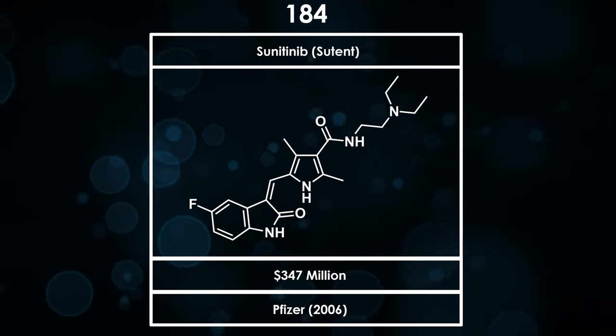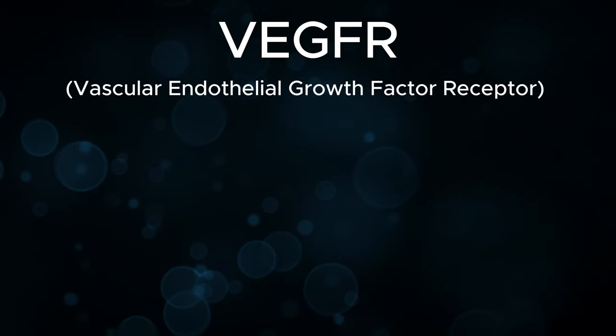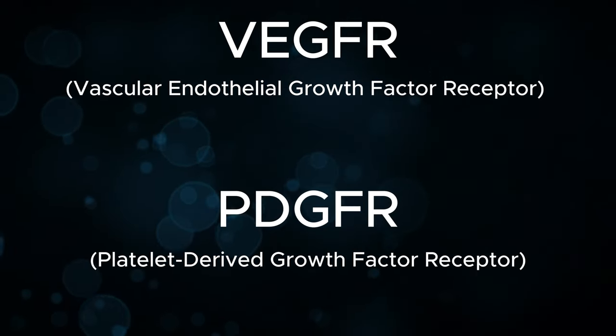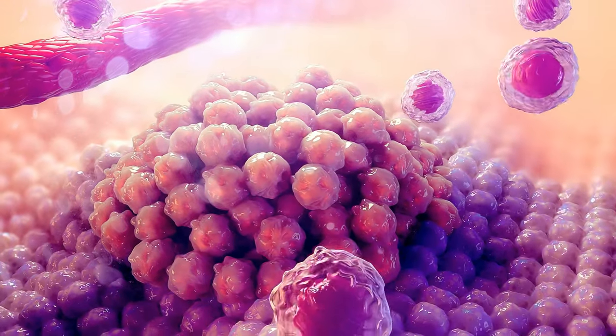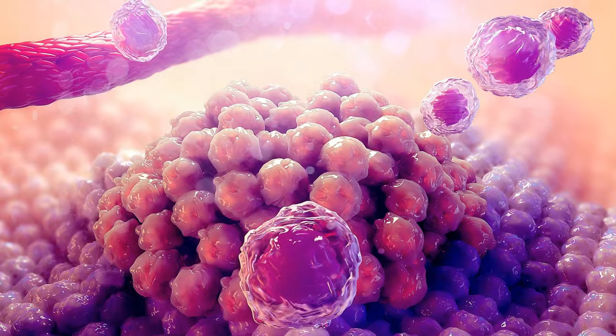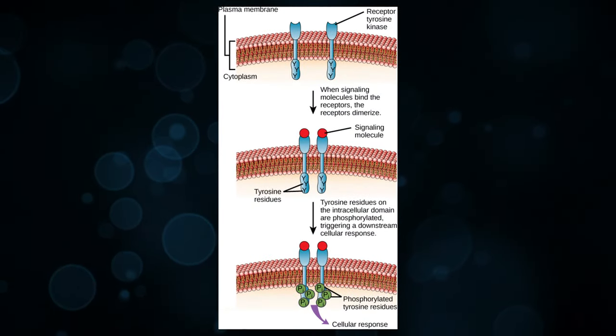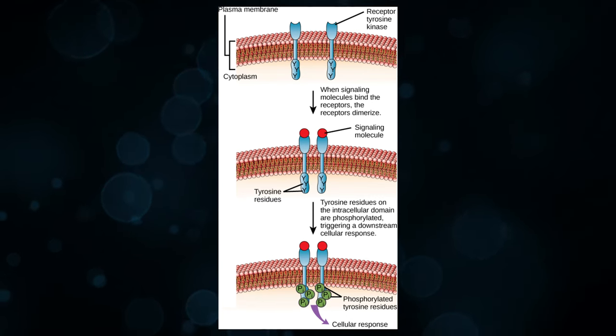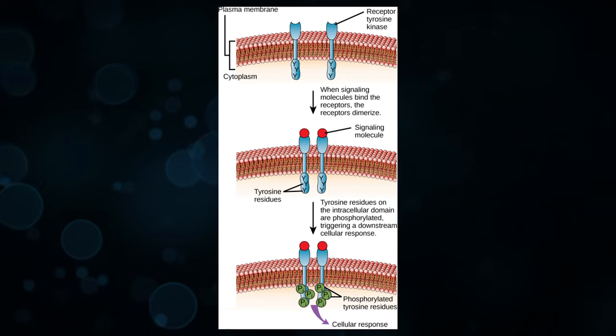Sunitinib works by acting as a dual inhibitor of vascular endothelial growth factor receptors and platelet-derived growth factor receptors, which are important in the growth and survival of cancer cells. They are both receptor tyrosine kinases, which when activated by a signaling molecule, catalyze the phosphorylation of tyrosine residues, which causes downstream effects in the cell.